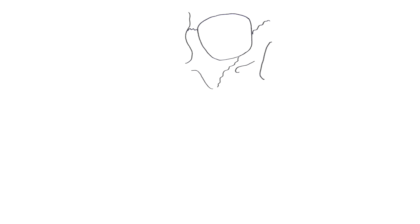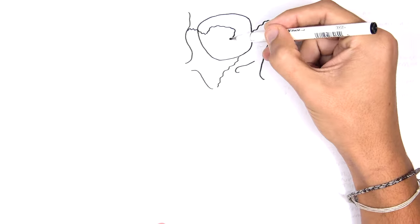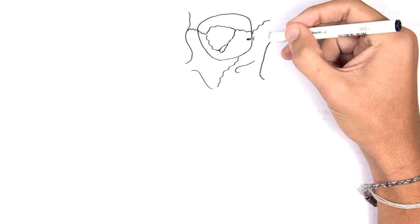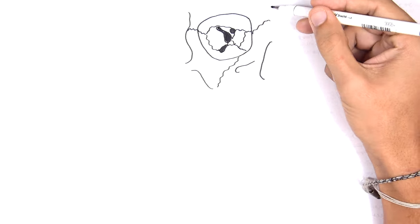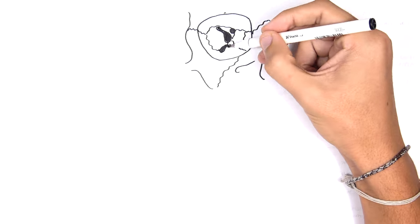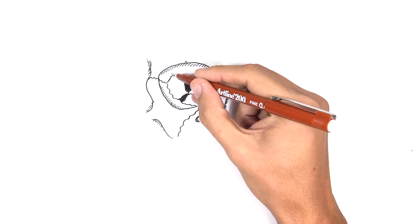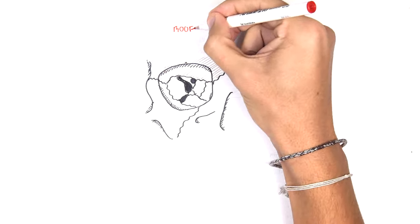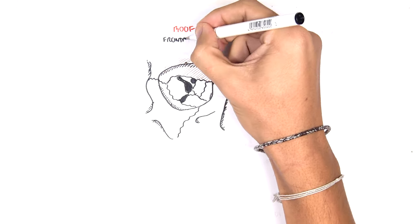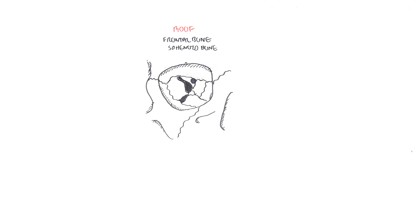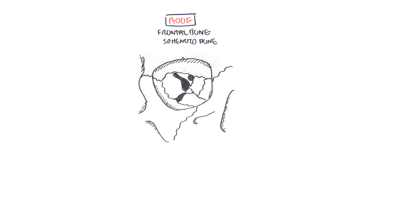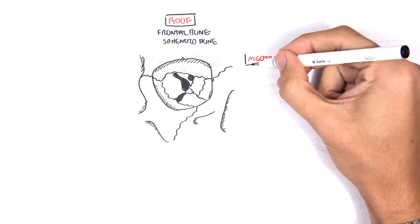In this video we're going to learn about the orbit of the eye. Here we can see the bones which surround and contain the eyeball. The bones of the orbit have boundaries. The roof is made up of the frontal and sphenoid bone. The medial boundary, which is closest to your nose, is made up of mainly the maxilla, lacrimal bone, ethmoid, and a small part of the sphenoid.